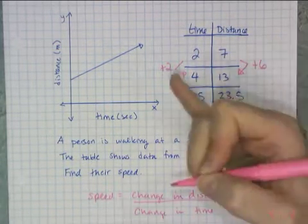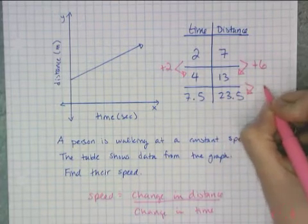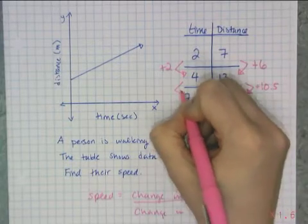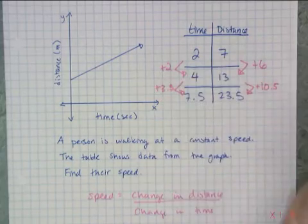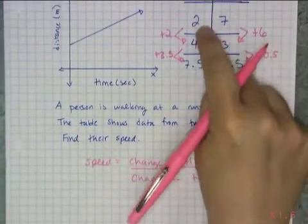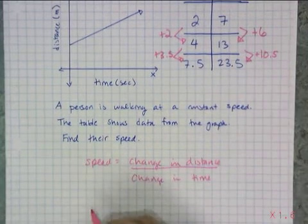So that means they had a 6 meter difference in distance in a 2 second period of time. And if I find this distance here, it's a change of plus 10.5, and this change in time is a plus 3.5. So to verify that the speeds are constant between these two points and those two points, and therefore verify it's linear, I need to check this ratio.